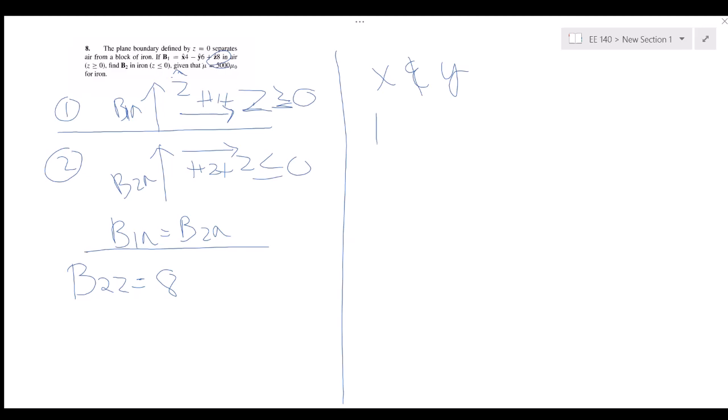So the boundary condition for this is h1t minus h2t is equal to the surface current density. The surface current density is defined as a current over the length. In this case there's no surface current density on the boundary, so this is going to zero.